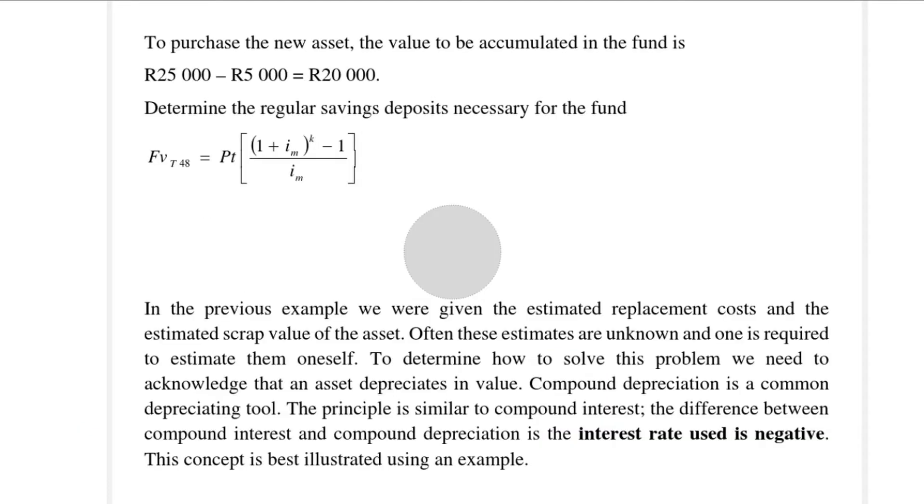To purchase the new asset, the value to be accumulated in the fund is R20,000. Now we want to calculate the regular savings deposits that we need to make into this fund, and we will use the future value annuity formula. We use the future value annuity formula because we have the R20,000 which is the future value, the value that we need in the end. We have the future value, we have the interest rate, and we have k, and we would like to calculate the payments.